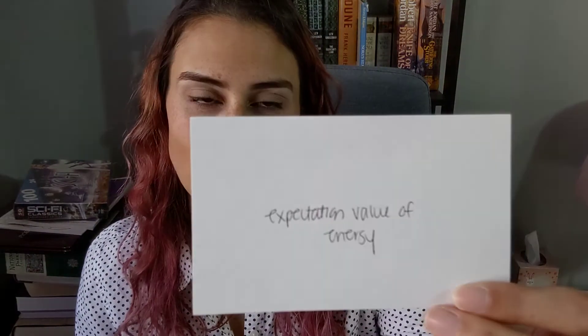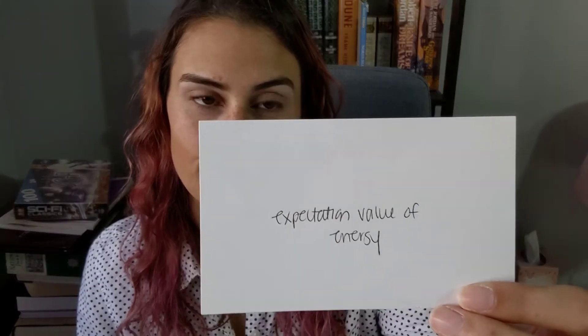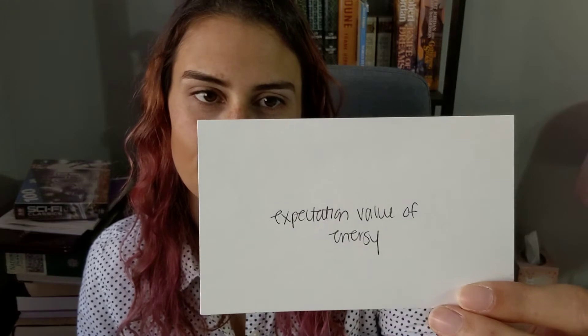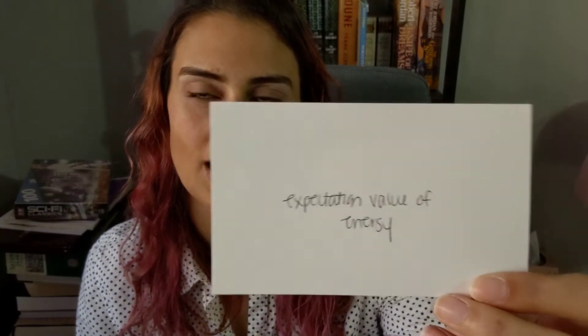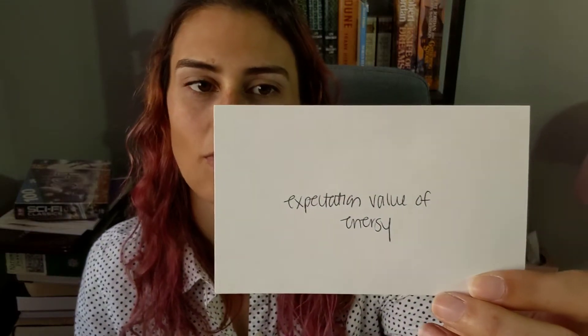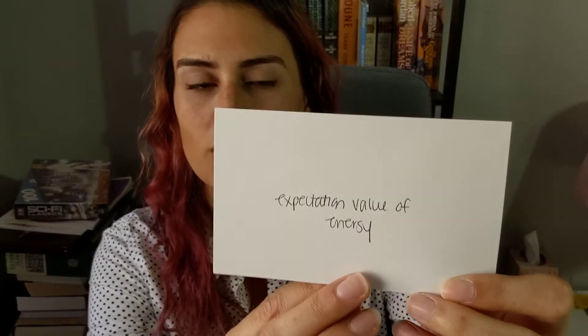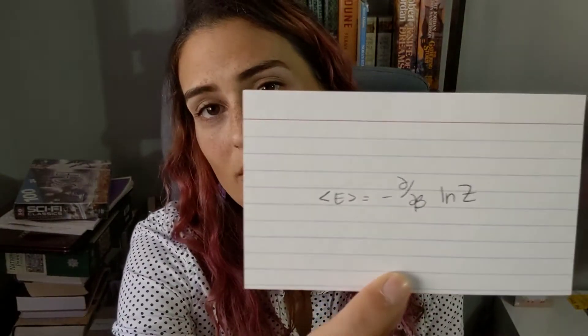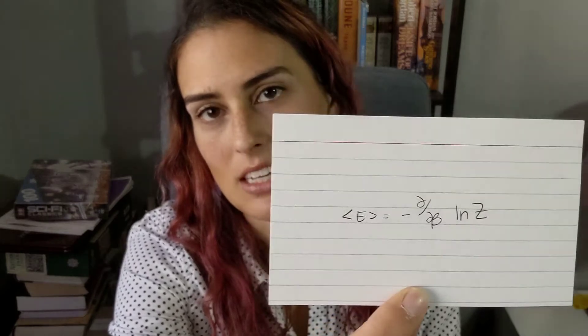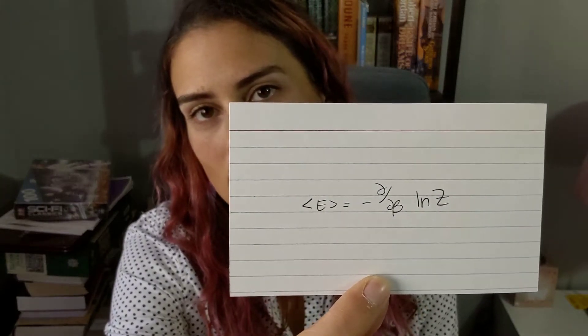The expectation value of energy is equal to the negative partial derivative with respect to beta of the log of Z, where Z is the partition function.